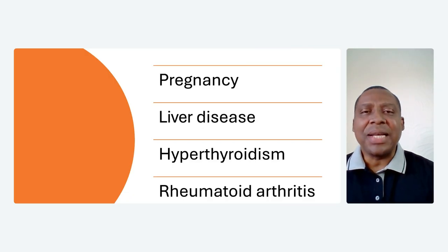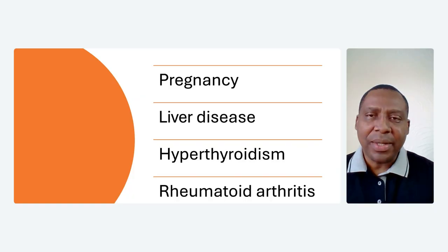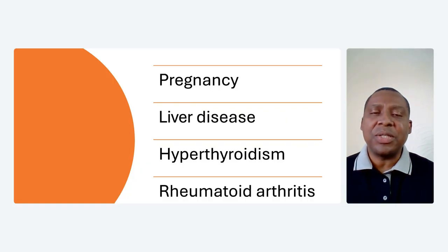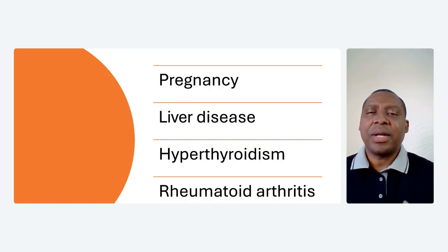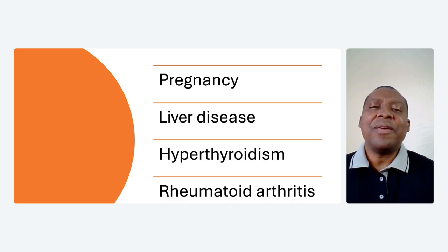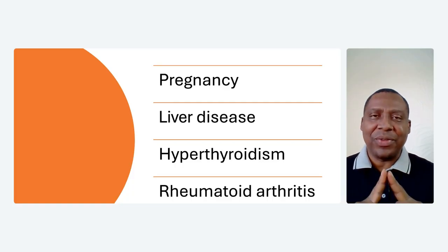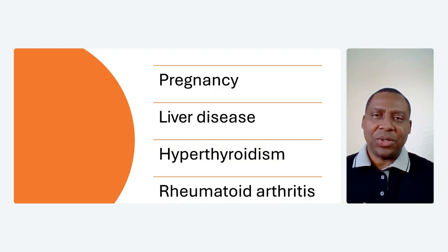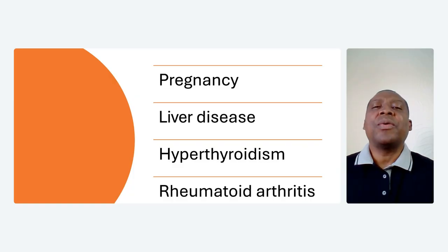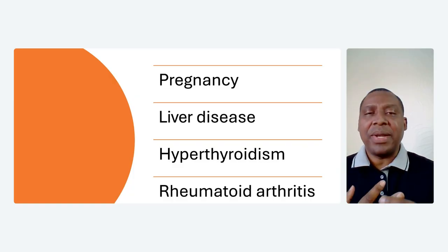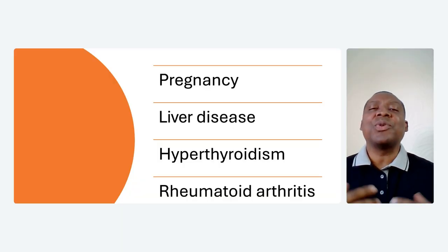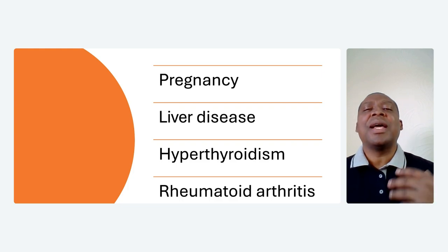So why does this happen? Which conditions are associated with redness of the palm? Number one: pregnancy. The hormonal changes, specifically the raised level of estrogen, can be responsible for the redness in the palm. Once you have dilatation or widening of the capillaries — the smallest blood vessels — you have more blood flow towards that area and it becomes red.